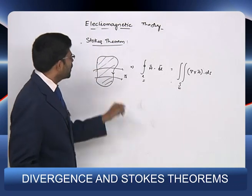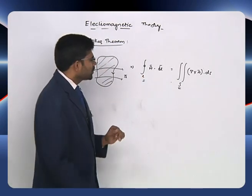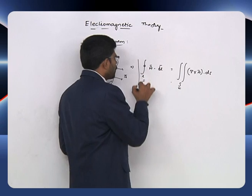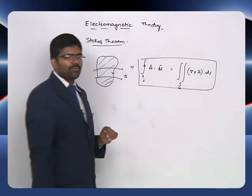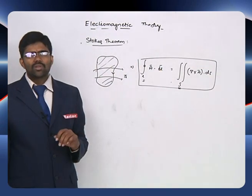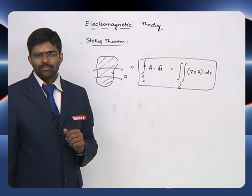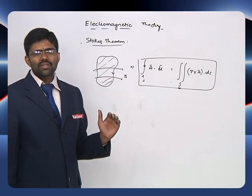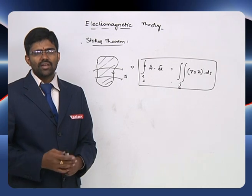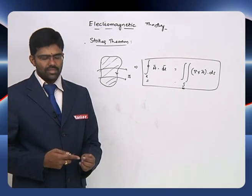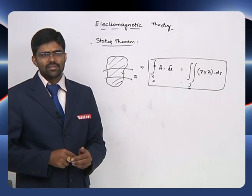To summarize: the divergence theorem relates the closed surface with the volume, and Stokes' theorem relates the closed line with the surface. These two equations are helpful for converting and understanding Maxwell's equations. With this, we finish the introduction part of electromagnetics, and later we can solve problems from various competitive examinations.